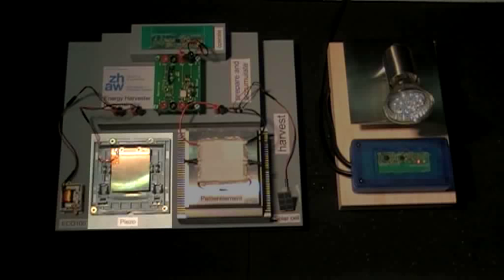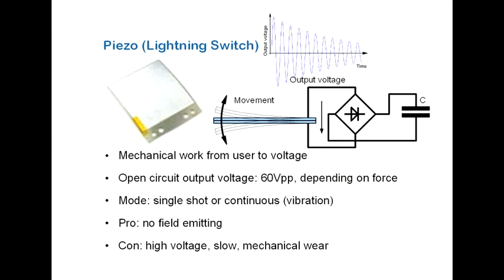The piezo is also operating in single mode. After pushing, it will swing for a short period. This makes it slow. The output voltage can reach 60 volts. Because of the oscillation, there is also a rectifier needed.